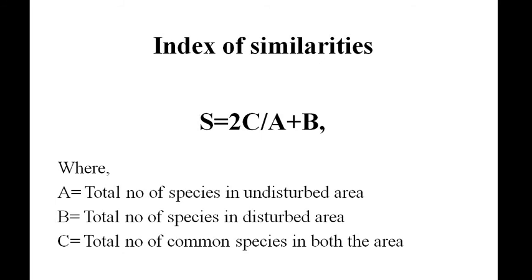Sorensen in 1984 forwarded a formula that is S equals 2C divided by A plus B, where A is total number of species in undisturbed area, B is total number of species in disturbed area, and C is total number of common species in both the area.